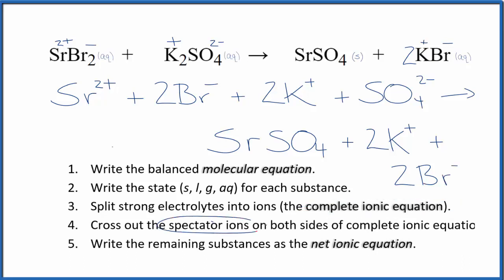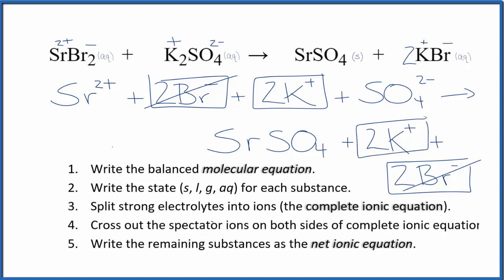Now we can cross out those spectator ions. They're on both sides of the complete ionic equation. I see in the reactants here I have two bromide ions, and I also have those two bromide ions in the products. Let's cross those out. Those are spectator ions. Two potassium ions in the reactants, and then again in the products. Spectator ions. Cross them out.